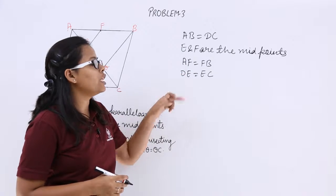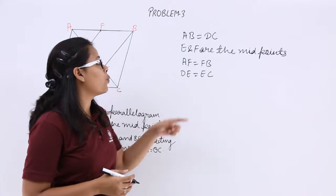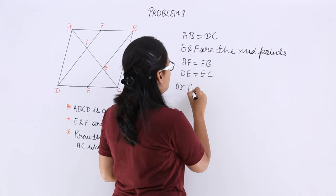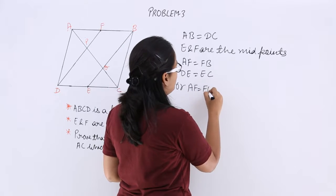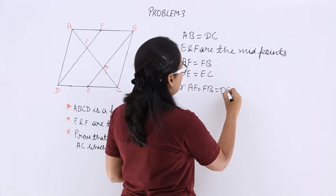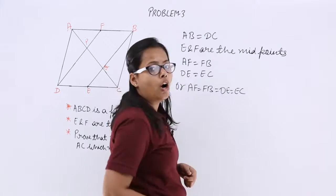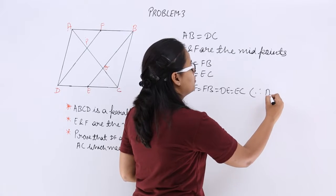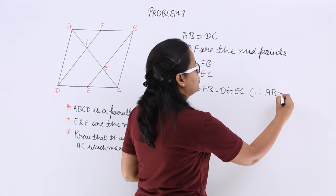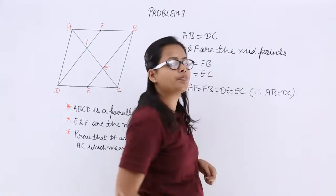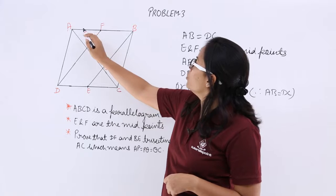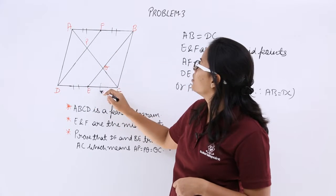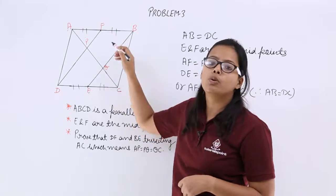These four segments are also equal to each other, because AB is equal to DC. You can also write it as AB is equal to DC, so this side will become equal to this side. Hence, all these four segments are equal to each other.